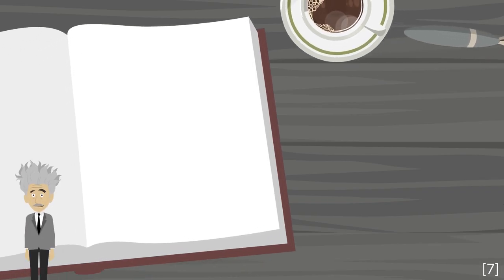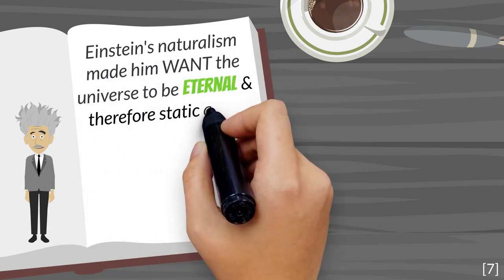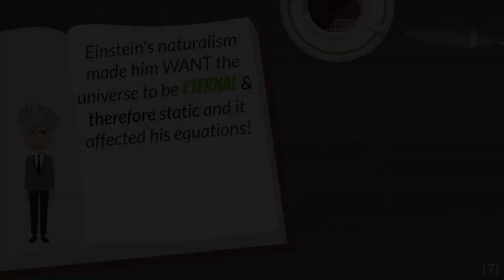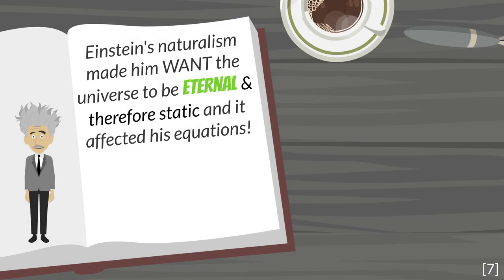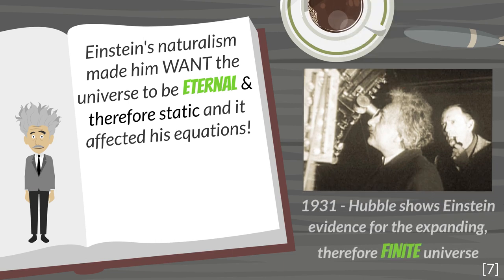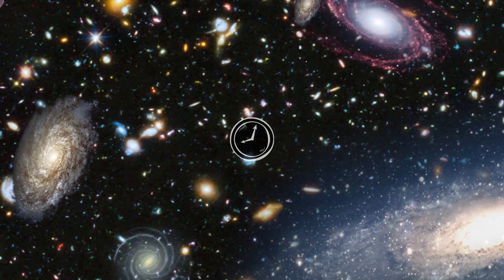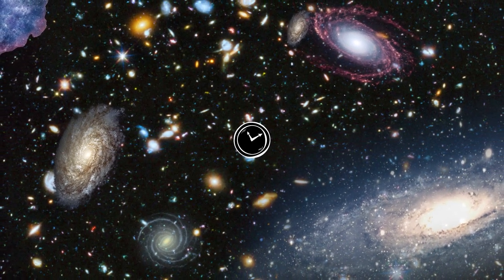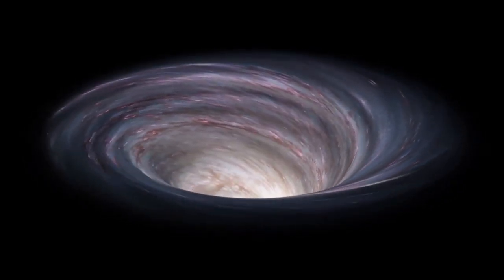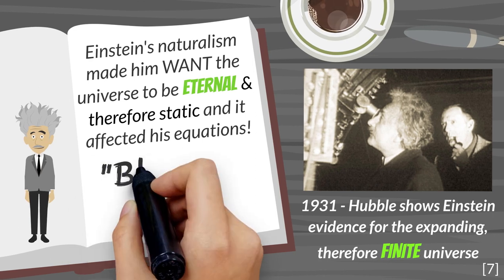Albert Einstein held to a similarly naturalistic worldview. It made him want the universe to be eternal, and therefore static, and he let this affect his equations. He assumed that as time goes on, the universe was sitting in place, largely unchanged. That was until Edwin Hubble showed Einstein evidence for the expanding, therefore finite universe. In reality, as time marches forward, the universe expands. It's only reasonable to assume that as we back extrapolate further into the past, the universe must have been more compact, eventually reaching a point of near infinite density. Einstein let his presuppositions affect his math. He would go on to call this his biggest blunder.